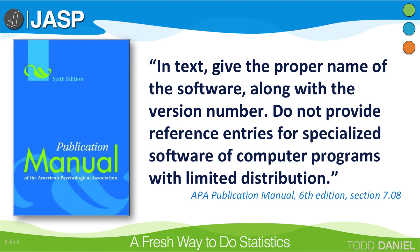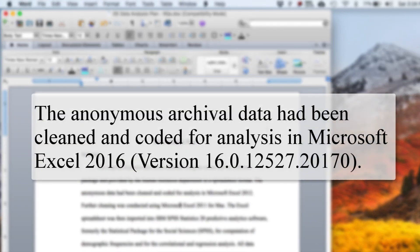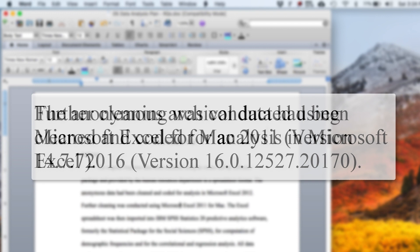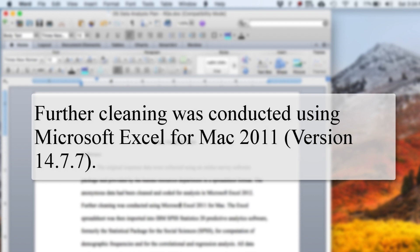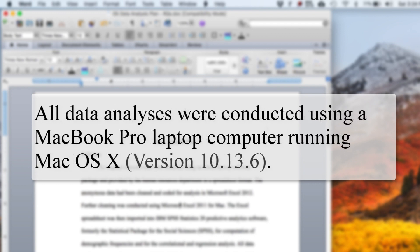Do not provide reference entries for specialized software or computer programs with limited distribution. For example, I might write: the anonymous archival data had been cleaned and coded for analysis in Microsoft Excel 2016, followed by the version number. Further cleaning was conducted using Microsoft Excel for Mac 2011, version number. The Excel spreadsheet was then imported into IBM SPSS Statistics version 25. All data analyses were conducted using a MacBook Pro laptop computer running Mac OS X, version number.